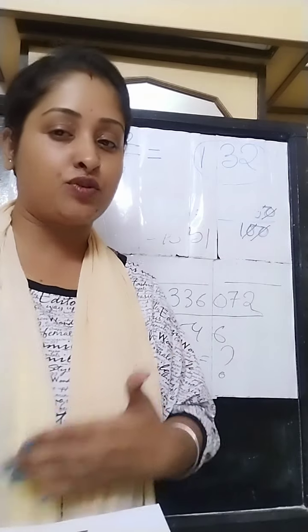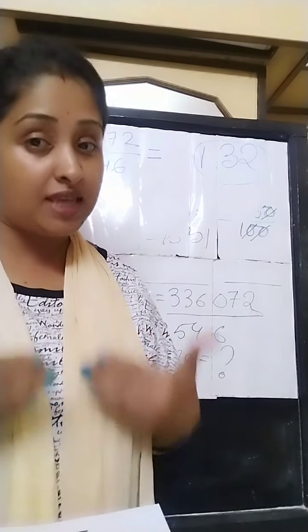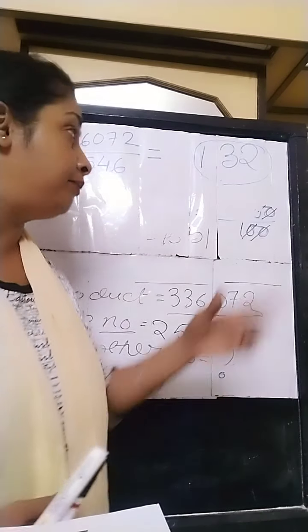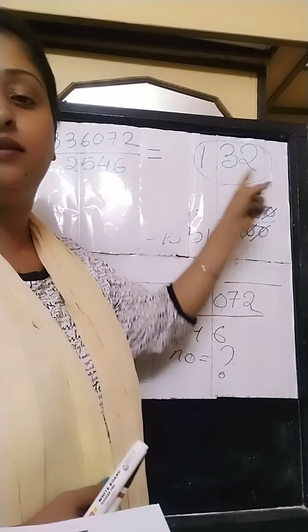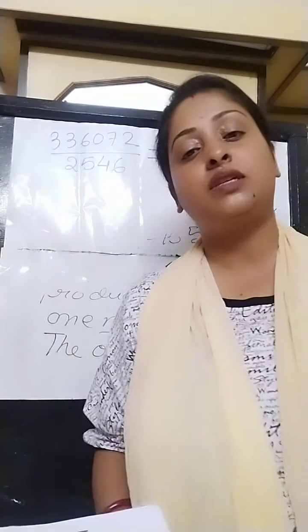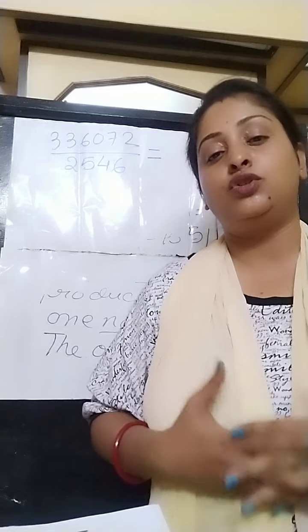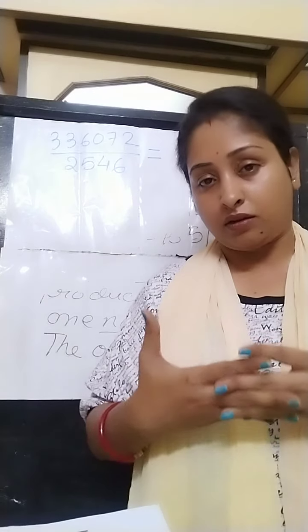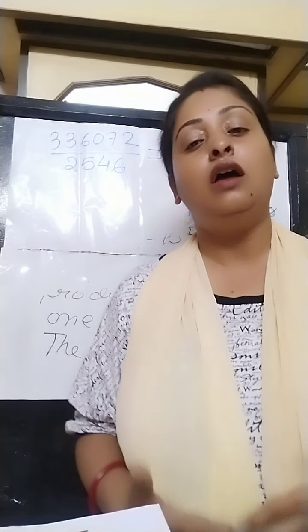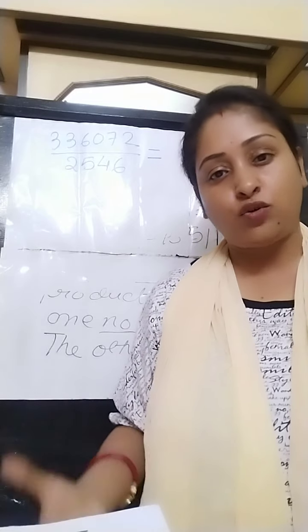Whenever these types of sums are given, the product is divided by the one number that is known to find out the other number, which is 132 in this sum. In this way we solve different sums associated with multiplications and divisions. I will help you more in the online classes. I hope whatever I have explained you have understood. Till then, goodbye.